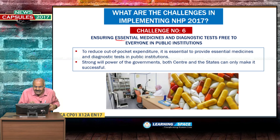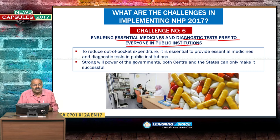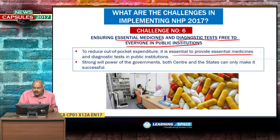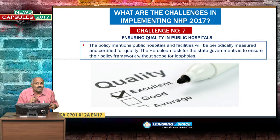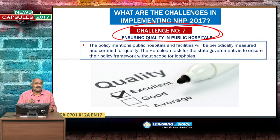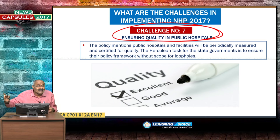Ensuring essential medicines and diagnostic tests are free to everyone in public institutions is crucial. To reduce out-of-pocket expenditure, public institutions must provide essential medicines and diagnostics. Only strong willpower from both central and state governments can make it successful. The next challenge is ensuring quality in public hospitals — the upper and middle classes have already totally deserted government hospitals and government schools in most locations across the country.